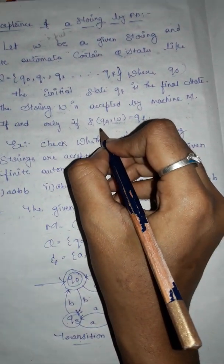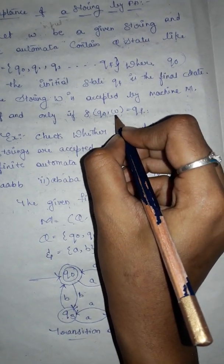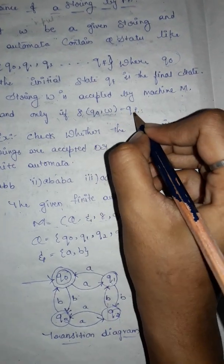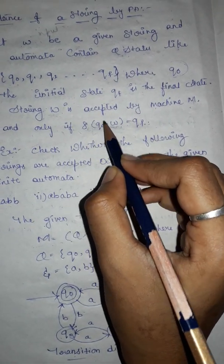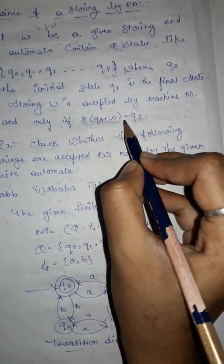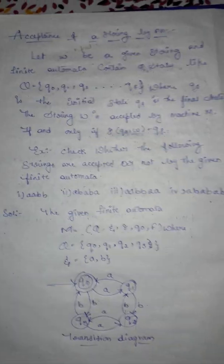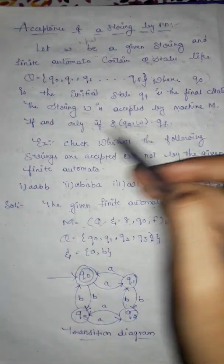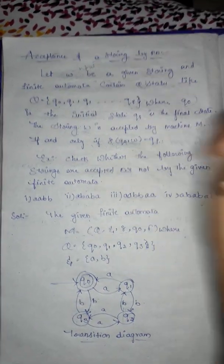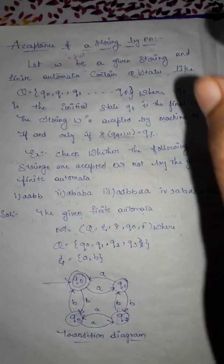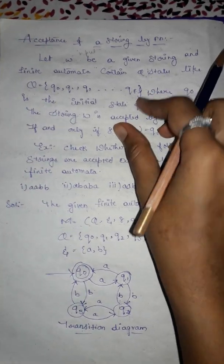So q0 is the initial state, w is the input, and qf is the final state. The transition of the initial state with the input equals qf. This is the definition of acceptance of a string by finite automata. If you're still confused with this definition, let's discuss it with an example.